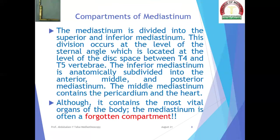The mediastinum is divided into the superior and inferior mediastinum. This division occurs at the level of the sternal angle, located at the level of the disc space between T4 and T5 vertebrae. The inferior mediastinum is anatomically subdivided into the anterior, middle, and posterior mediastinum. The middle mediastinum contains the pericardium and the heart. Although it contains the most vital organs of the body, the mediastinum is often a forgotten compartment.